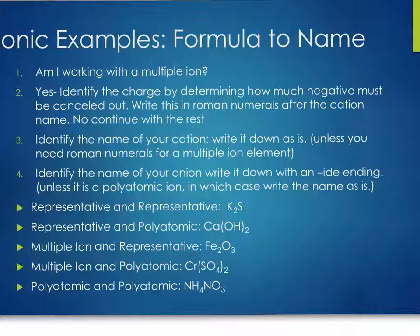For ionic examples going from formula to name: the key question is whether you're working with a multiple-ion element. If yes, you must identify the charge and include Roman numerals. Otherwise, it's straightforward — write out the cation name, add Roman numerals if needed, then identify the anion: add '-ide' if it's an element, or keep the polyatomic name as-is. For K₂S: potassium is not on the multiple-ion list, so just write potassium; sulfur drops its ending and becomes sulfide — potassium sulfide.